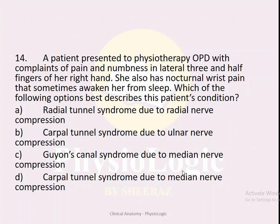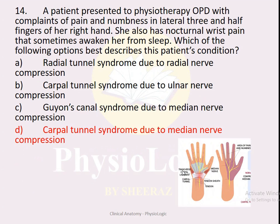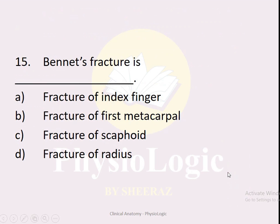MCQ number fourteen: A patient presents with pain and numbness in the lateral three and a half fingers of the right hand and nocturnal wrist pain that sometimes awakens her from sleep. Options: A — radial tunnel syndrome due to radial nerve compression, B — carpal tunnel syndrome due to ulnar compression, C — Guyon's canal syndrome due to median nerve compression, D — carpal tunnel syndrome due to median nerve compression. The correct option is D — carpal tunnel syndrome due to median nerve compression, which causes numbness and pain in the lateral three and a half fingers.